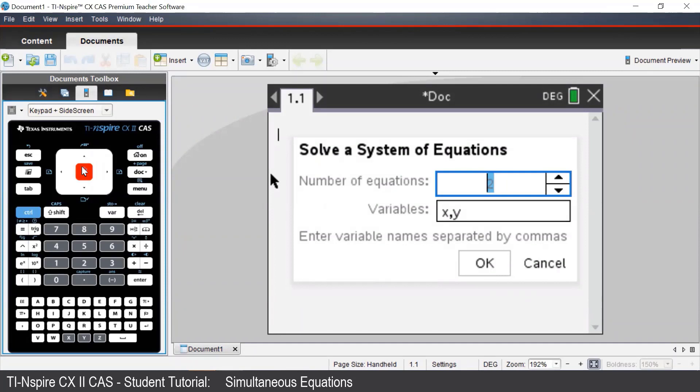In this pop-up menu, we enter the number of simultaneous equations we will be working with, and the variables we wish to solve for. We can press Tab to navigate between our fields. When entering in our variables, we need to put in a comma to separate our variables.